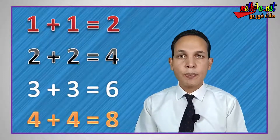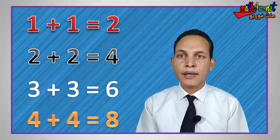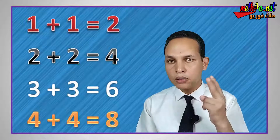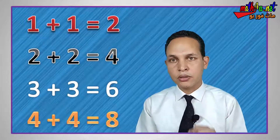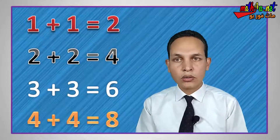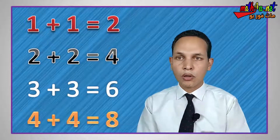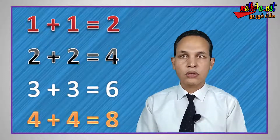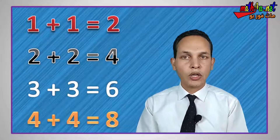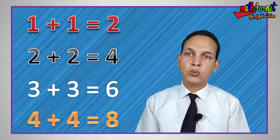Now, can you understand what 'double' means? Double is when you add the same number to itself. One plus one equals two. Two plus two equals four.